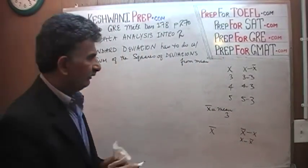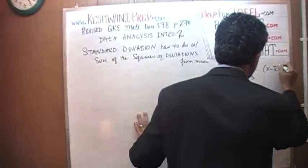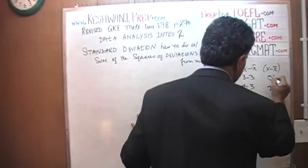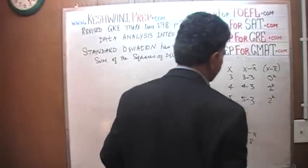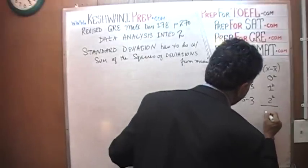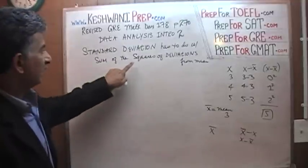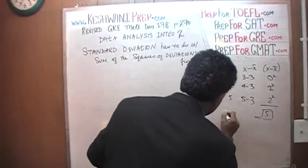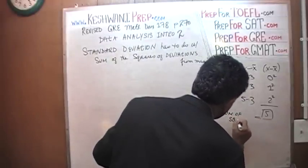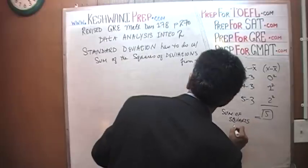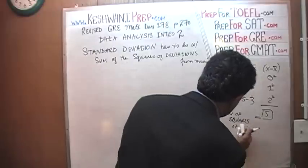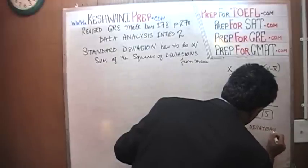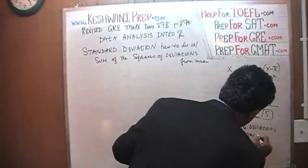Now once we have these quantities, we square them. Three minus four is negative one — negative one squared is one. Four minus four is zero — zero squared is zero. Five minus four is one — one squared is one. We add them up and in this case we get a total of two. Actually, let me correct: the deviations are zero, one, and two from the original erroneous setup. The key point is this sum represents the sum of the squares of the deviations from the mean.